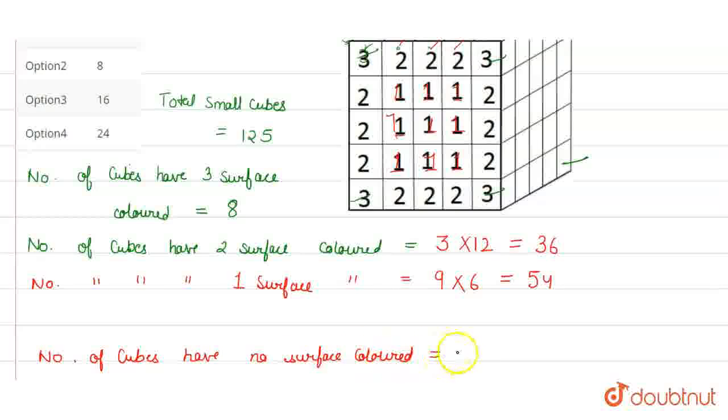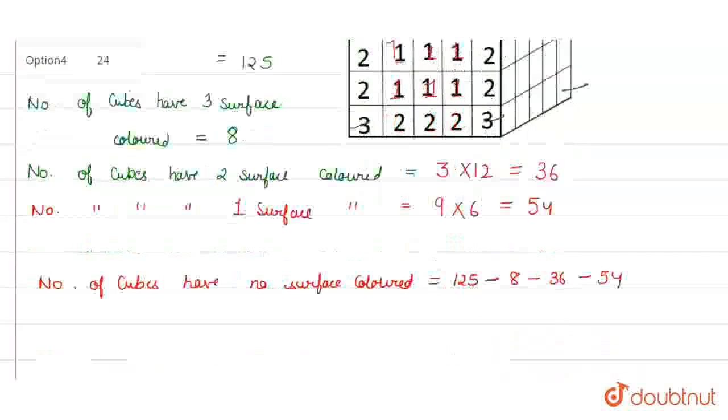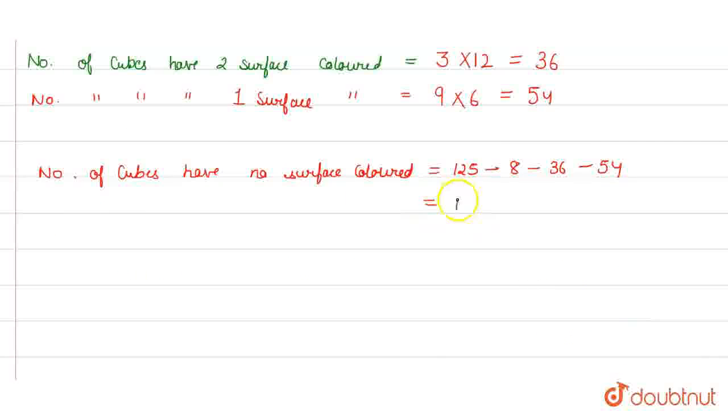Now to find cubes with no colored surface, we will subtract these cubes from the total. So we calculate: 125 minus 8 minus 36 minus 54. How much is this? This will be 98.